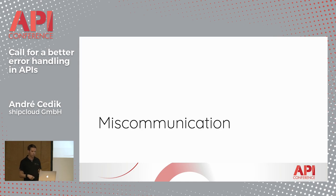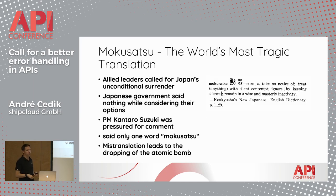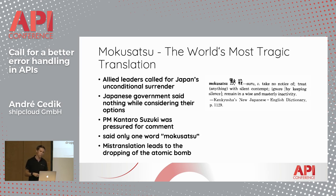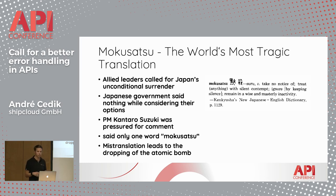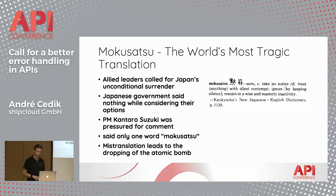Let's head into two more examples of miscommunication and what they can lead to. After the victory in Europe, the Allied leaders called for Japan's unconditional surrender at the Potsdam Conference. Initially, the Japanese government said nothing while they were considering their options. When the press forced Prime Minister Kantaro Suzuki for a comment, he only said one word: "Mokusatsu." It was a poor choice of words, since the word has multiple different meanings. All the Prime Minister wanted to say was "no comment." Instead, the press translated it as "not worthy of comment." The Allied leaders were so enraged that ten days later, the atomic bomb was dropped on Hiroshima and Nagasaki.